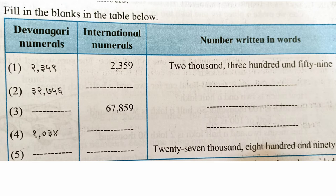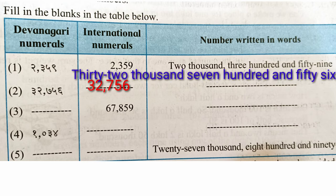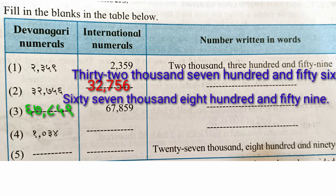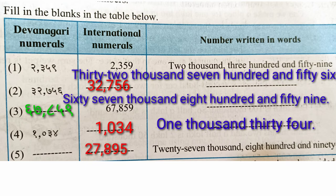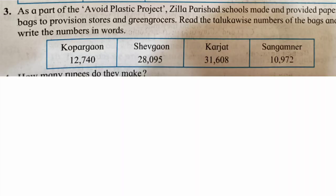The table has Devanagari numerals, international numerals, and numbers written in words. The first row has all three filled in. The second is thirty-two thousand seven hundred and fifty-six — write it in international numerals and in spelling. The third is sixty-seven thousand eight hundred and fifty-nine — write in Devanagari and spelling. Also complete: one thousand thirty-four, and twenty-seven thousand eight hundred and ninety-five.